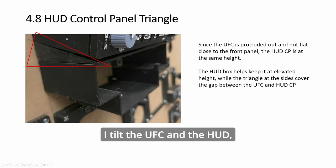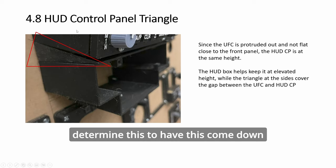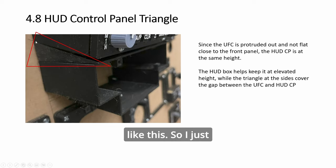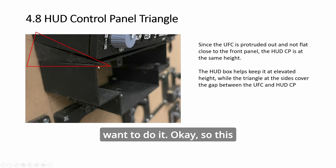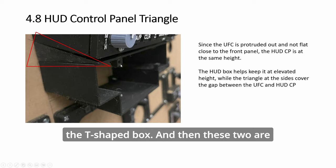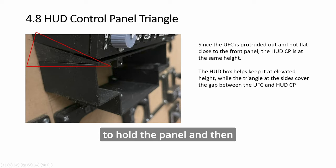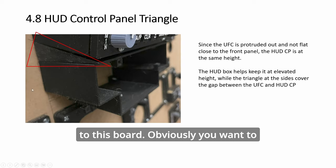The way I tilt the UFC and the heart, there's a gap. So it was tricky to determine this. To have this come down like this. So I just cover the gap. So depending on how you want to do it. Okay? So this is the box I was talking about. The T-shaped box. And then these two are to hold the panel. And then some more inside to mount it to this board. Obviously you want to paint this board.